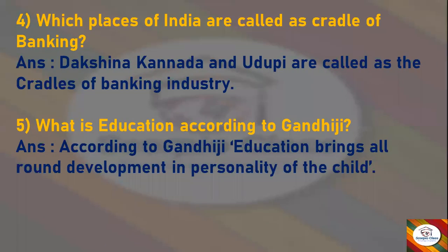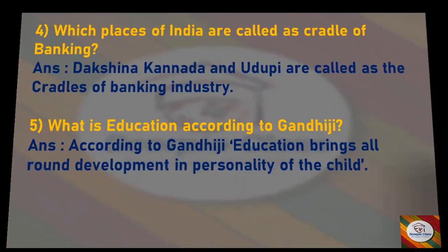Next question: Which places of India are called the cradle of banking? Answer: Dakshina Kannada and Udupi are called the cradles of the banking industry. Next question: What is education according to Gandhiji? Answer: According to Gandhiji, education brings all-round development in the personality of the child.